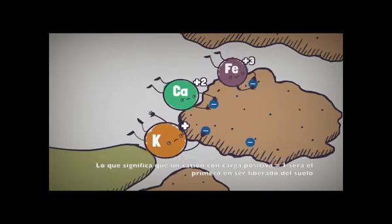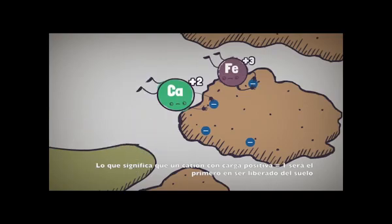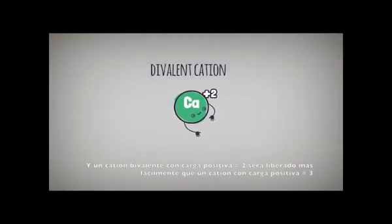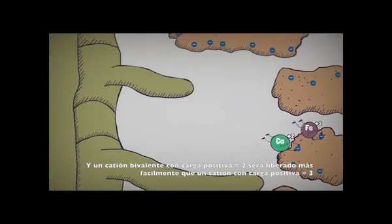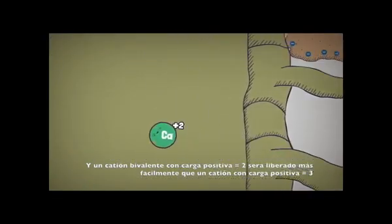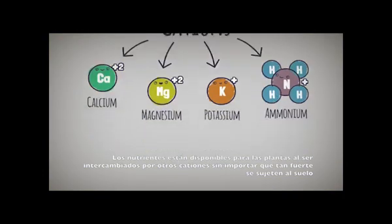A large cation with a positive charge of one will be the first to be released. A divalent cation having a charge of two will be released more easily than a cation with a positive charge of three. Whether they are held tightly or not, the nutrients are available to the plant in exchange for other cations.